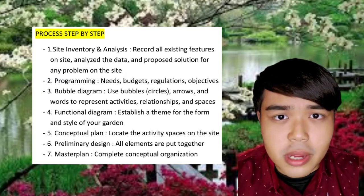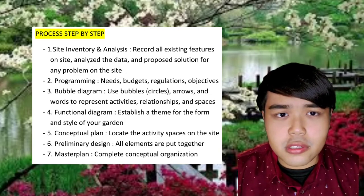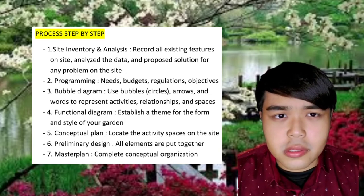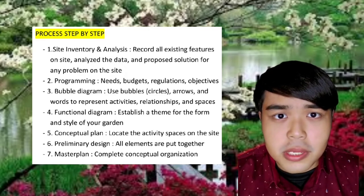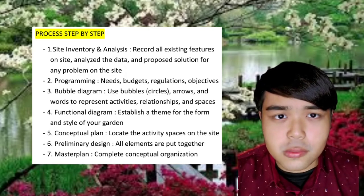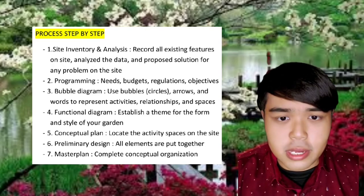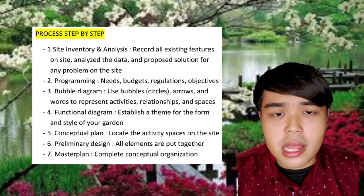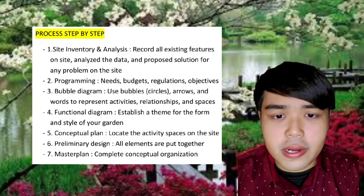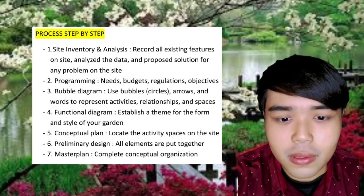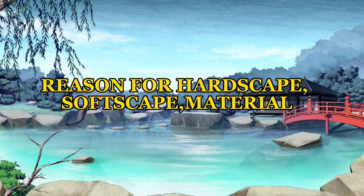The fourth step is a functional diagram — we need to establish the form and style of your garden. The fifth is the conceptual plan, where I need to locate the activity spaces on the site. The sixth is the preliminary design, where all elements are put together. The last but not least is the master plan, which is the complete conceptual organization covering hardscape, softscape, and materials.